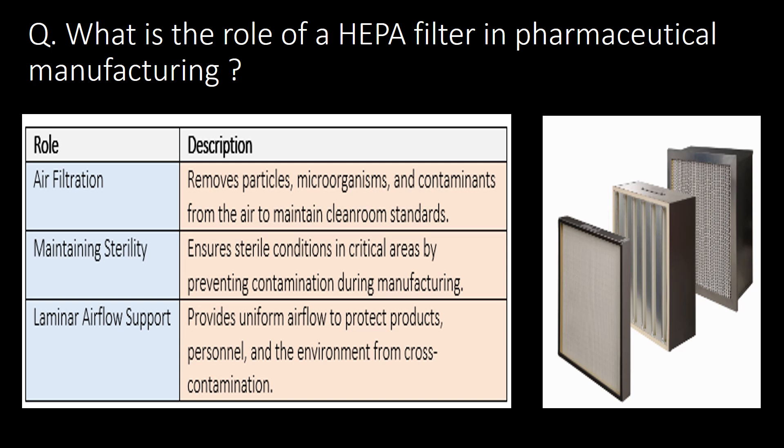What is the role of HEPA (High Efficiency Particulate Air) filter in pharmaceutical manufacturing? First, air filtration: HEPA filters remove particles, microorganisms and contaminants from the air to maintain cleanroom standards. Second, maintaining sterility: HEPA filters ensure sterile conditions in critical areas by preventing contamination during manufacturing. Third, laminar airflow support: HEPA filters provide uniform airflow to protect product, personnel and the environment from cross-contamination.